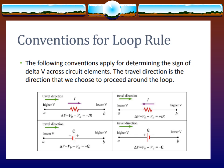Conventions of the loop rule: The following conventions apply for determining the sign of delta V across circuit elements. Choose a direction to proceed around the loop. If traveling from high V to lower V, delta V equals VB minus VA equals minus I times R. If traveling from lower V to higher V, delta V equals VB minus VA equals plus I times R.